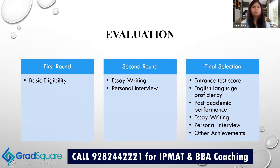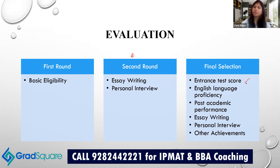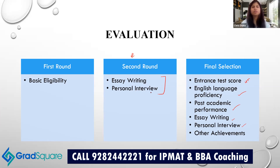For the evaluation process: to appear for the first round of SPGAT, you must clear the basic eligibility discussed. Your score in the SPGAT paper determines your second round entry. In the second round you are judged on essay writing skills and personal interview. The overall final selection considers your entrance test score (SPGAT, SAT, or ACT), past academic performance, essay writing and personal interview, and national or international achievements outside academics. You will be intimated of the result via email.